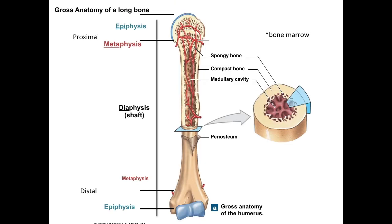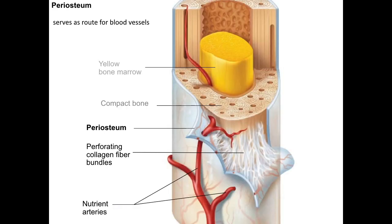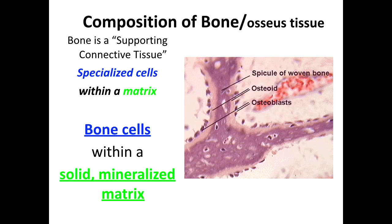That covers some of the gross anatomy. Next we're going to look at the histology of bone tissue, also known as osseous tissue. Like all connective tissues, it consists of specialized cells within a matrix — in this case, bone cells within a solid mineralized matrix. As always with connective tissue, the matrix is key to the properties of bone tissue.